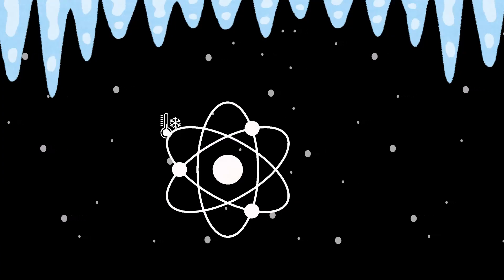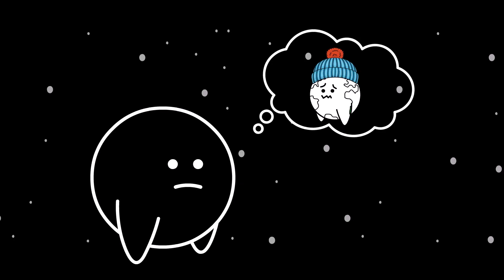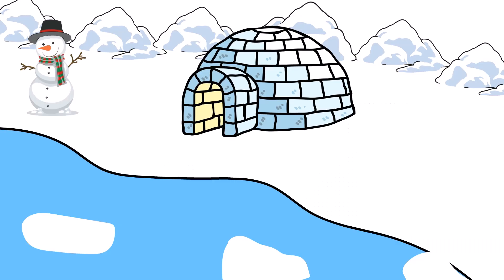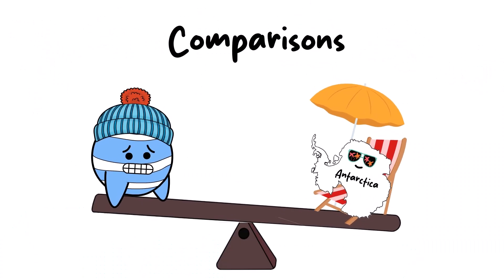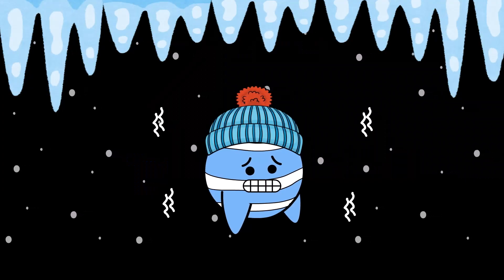This isn't hoodie weather, this is your atoms-might-give-up weather. It's colder than anywhere you can possibly imagine on Earth, even Antarctica. Compared to Neptune, Antarctica looks like a tropical getaway. But the chill isn't the only problem.